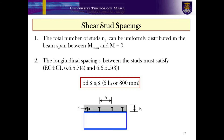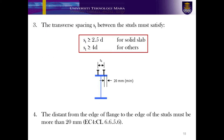Once we have determined the total number of shear studs required, we need to determine the spacing arrangement of the shear studs. The total number of studs NF can be uniformly distributed in the beam span between Mmax and M equals 0. However, the longitudinal spacing SL between the studs must satisfy EC4 clause 6.6.5.7.4 and 6.6.5.5.3. Meanwhile, the transverse spacing between the studs must satisfy the requirements shown in the red box, and the distance from the edge of the flange to the edge of the studs must be more than 20 mm, per EC4 clause 6.6.5.6.